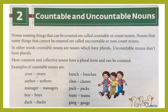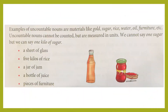Countable nouns can be made plural — river becomes rivers, author becomes authors, boy becomes boys. All countable nouns have plurals. In case of uncountable nouns, we don't have plurals. Uncountable nouns are nouns we cannot count and have no plural form. Examples: gold, sugar, rice, water, oil, furniture — we cannot say one sugar, two sugar, one water, two water. We cannot count them, so they are uncountable nouns.